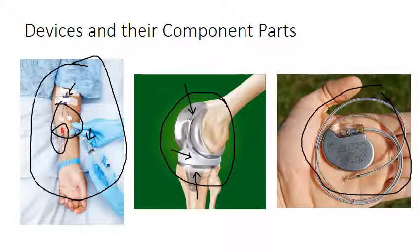Over here on the right is a pacemaker. Here again we have a metal casing attached to electrodes. The electrodes are insulated by a plastic coating — this is usually silicone, which is frictionless — and there are ceramic components in here as well, in the capacitor.